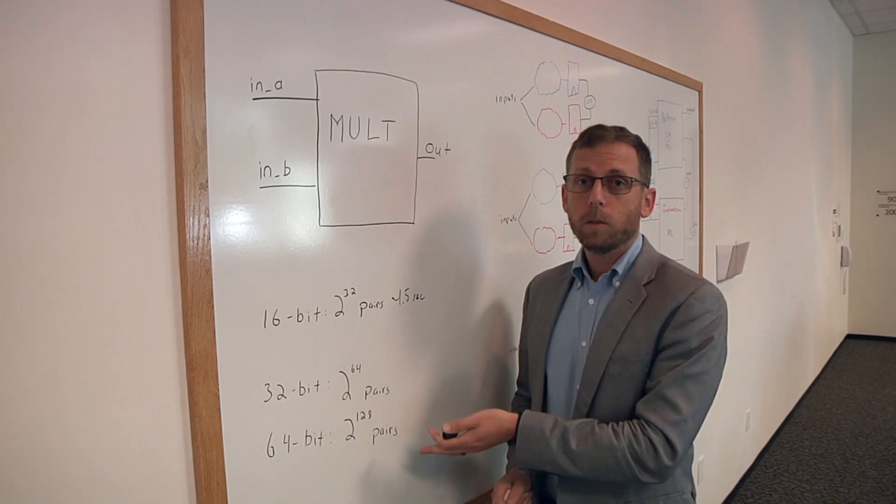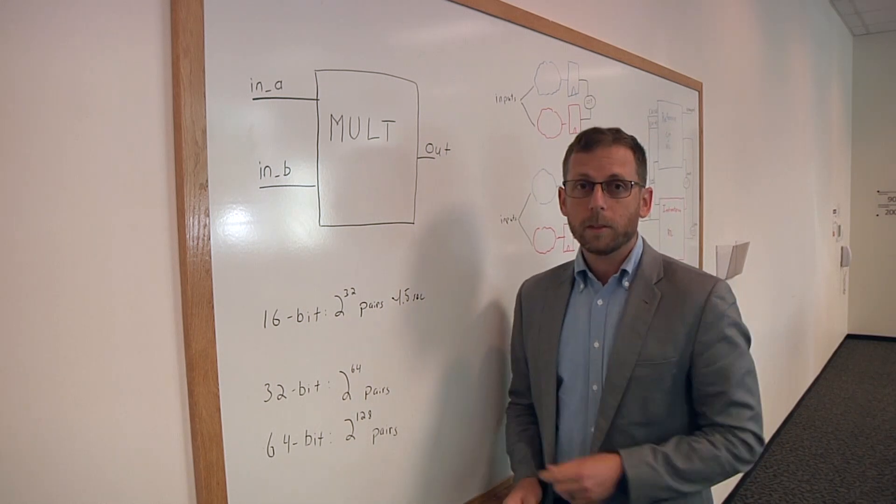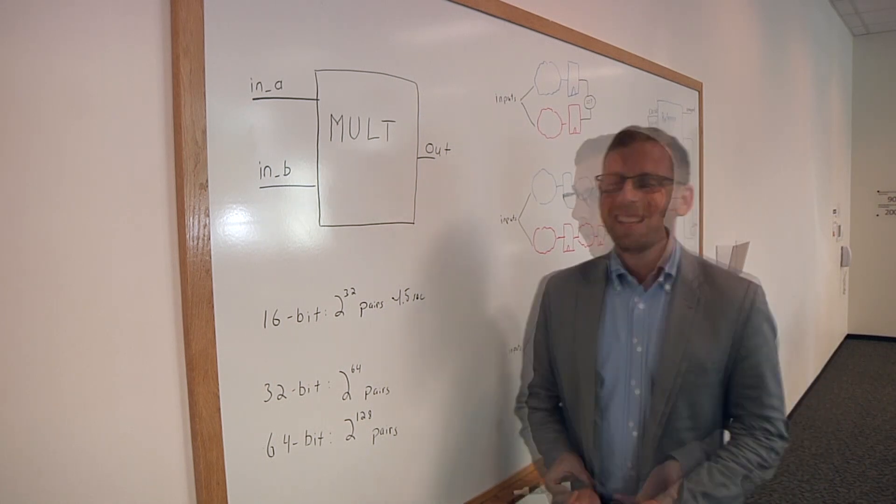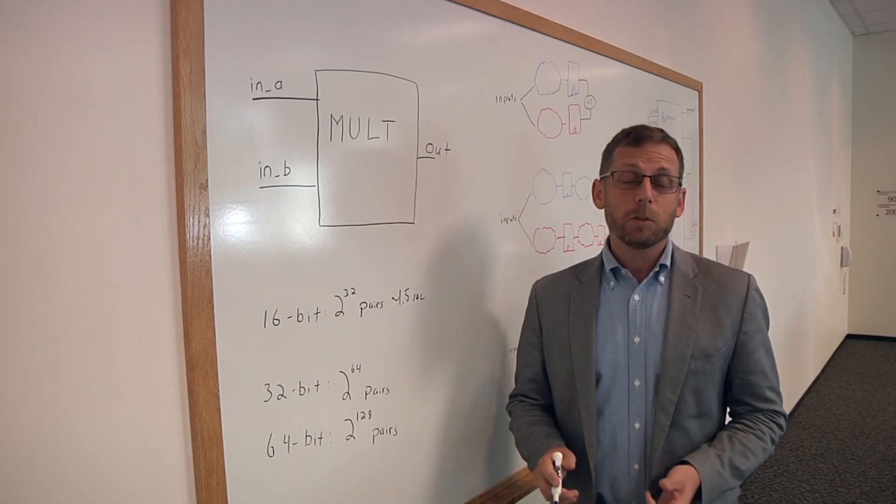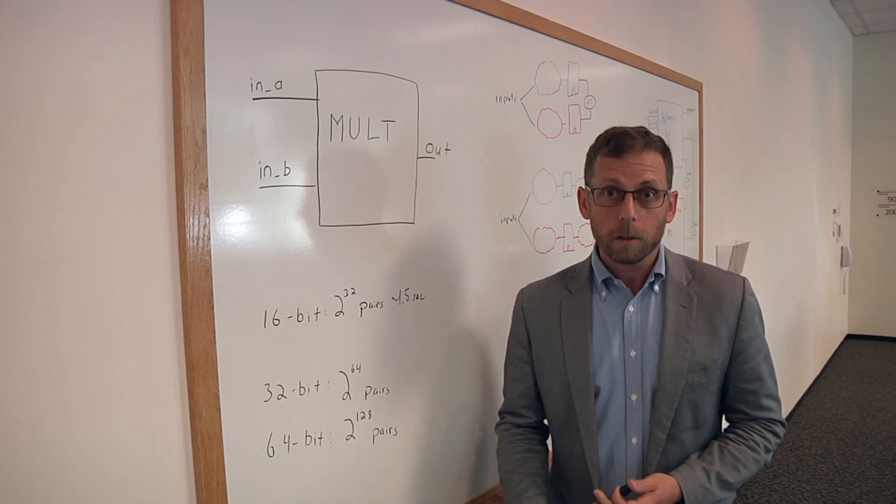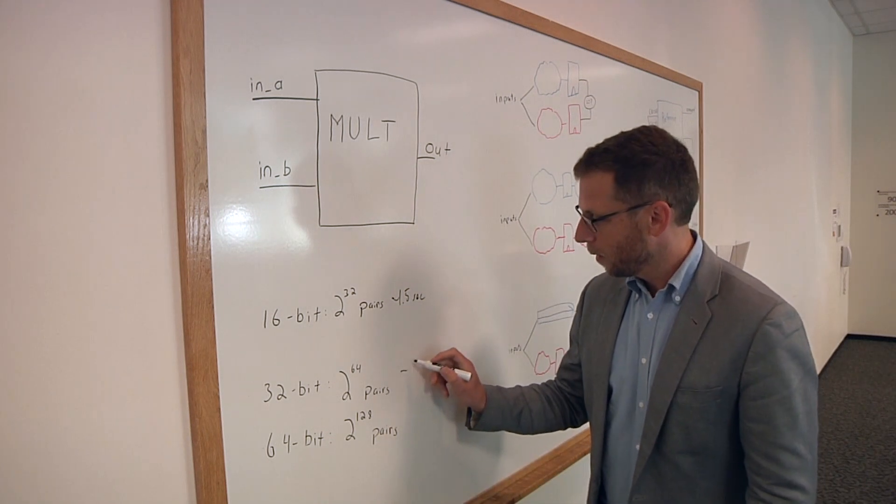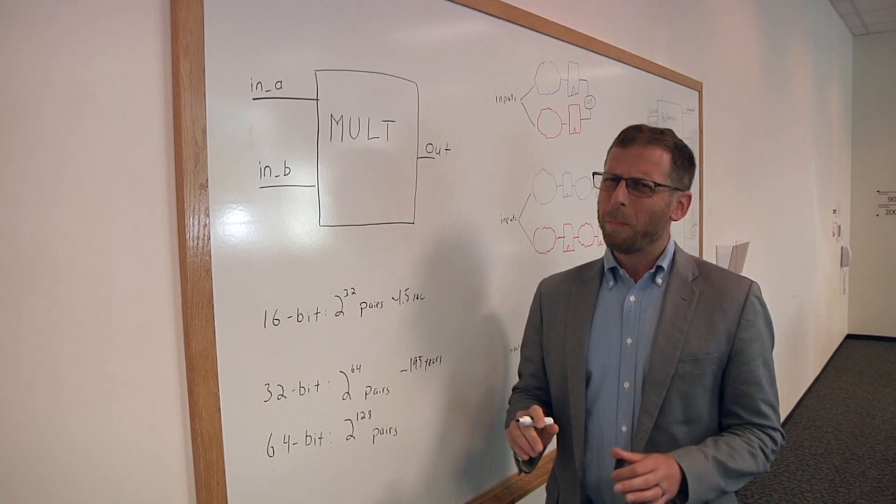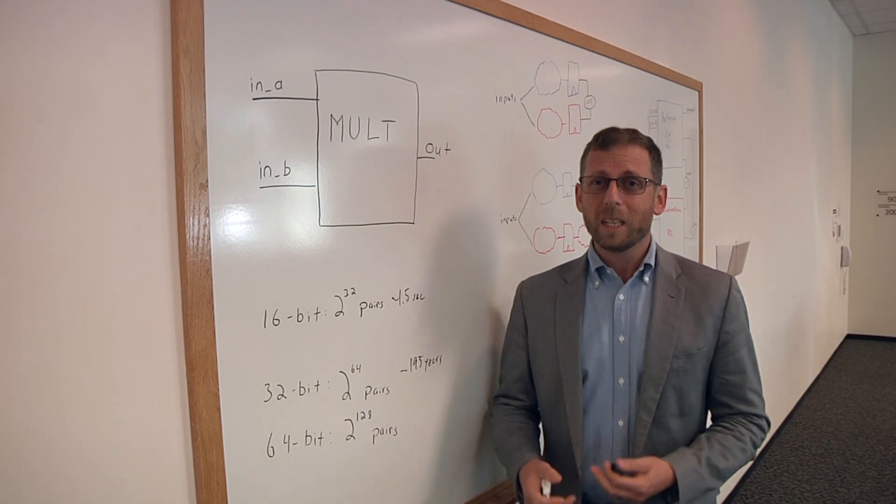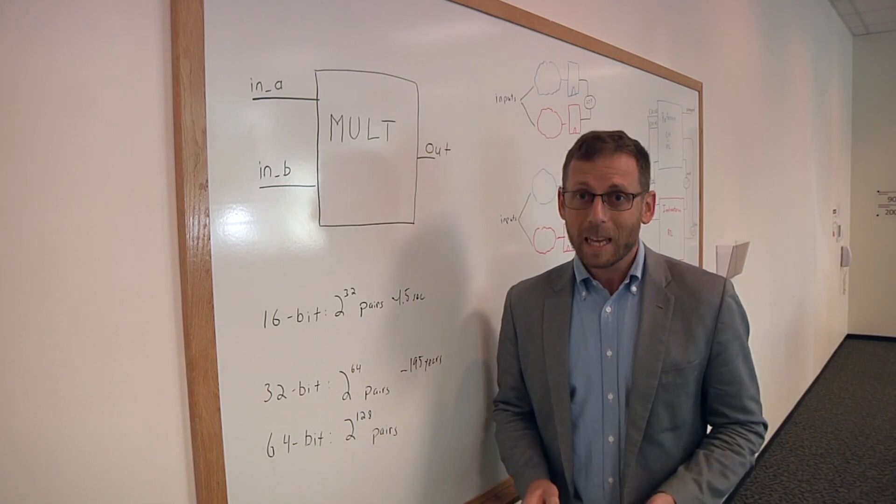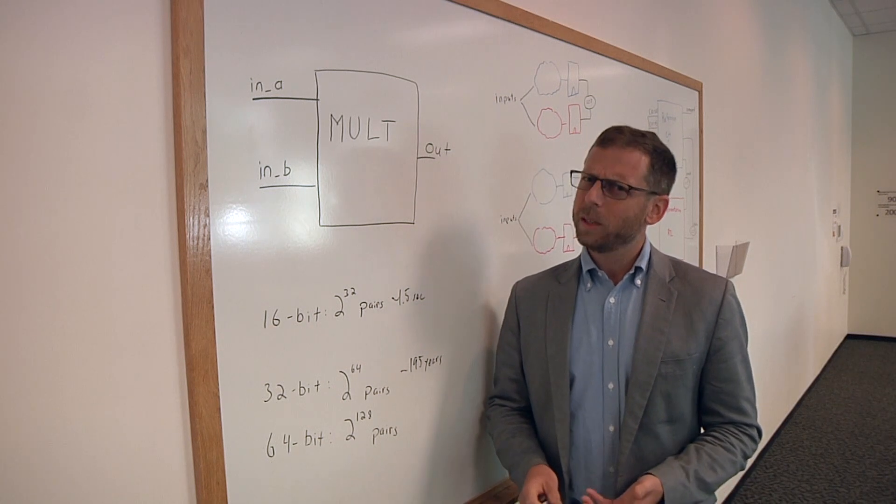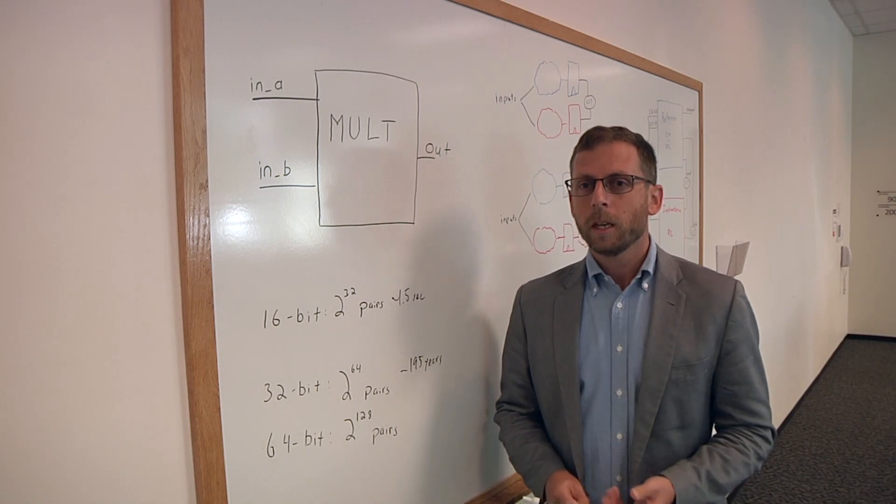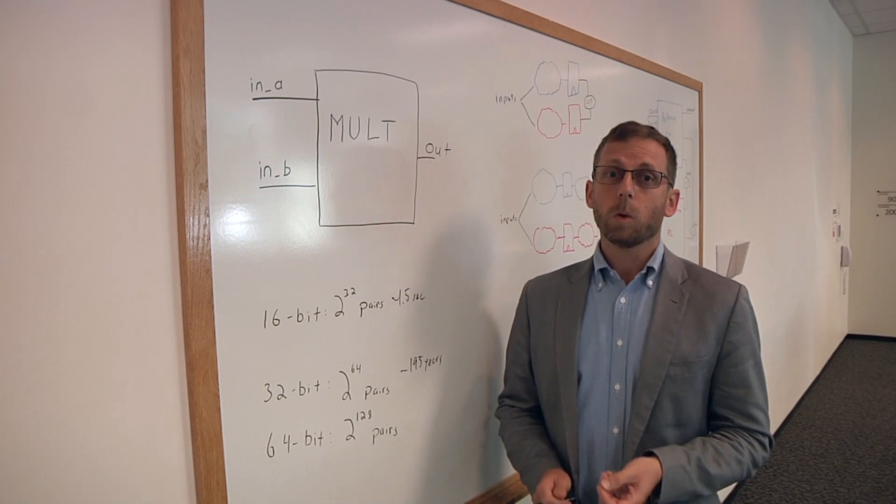Now, let's say we have 32-bit operands. This takes us to 2 to the 64 operand pairs, and at 3 billion operand pairs a second, now it's going to take us roughly 195 compute years to go through all of these operand pairs. That is possible, maybe, if it's something that's really, really important and we absolutely have to have it exhaustively correct, but it's unlikely that anyone's going to want to take that much verification resources towards one function.